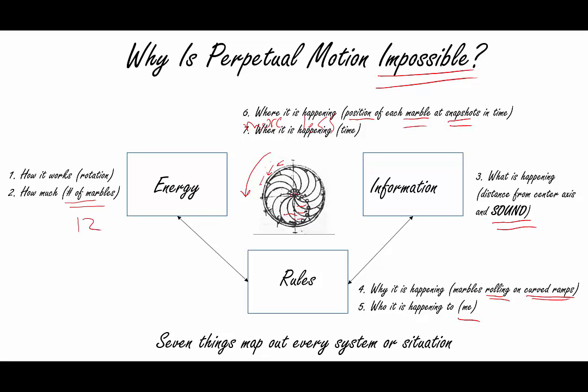But if you do this enough times, you can build a complete model of the rotation of the wheel and the position of all the marbles. The other thing you have to keep track of is time, which is when things are happening in the system. How long does it take for the marbles to move, and how fast is the wheel spinning? So if you can map out all these things, you'll find out that perpetual motion is impossible.